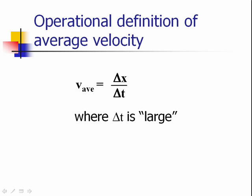With the caveat that delta t is large, and by large we mean large enough that this object, whatever it is we're describing, was able to speed up or slow down during the delta t.